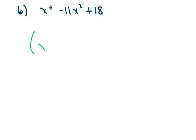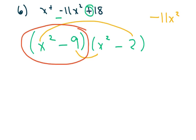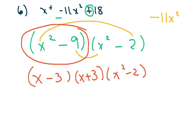Here's another one — same thing. It's going to be x squared times x squared, with minus and minus, because this is positive and this is negative. I have 11, so I think I'm going to use 9 and 2. Checking: negative 2x squared minus 9x squared is negative 11x squared. Now in this case it's not factored completely, because I can factor this by the difference of squares: x minus 3 times x plus 3 times x squared minus 2. Remember, a squared minus b squared equals a minus b times a plus b.